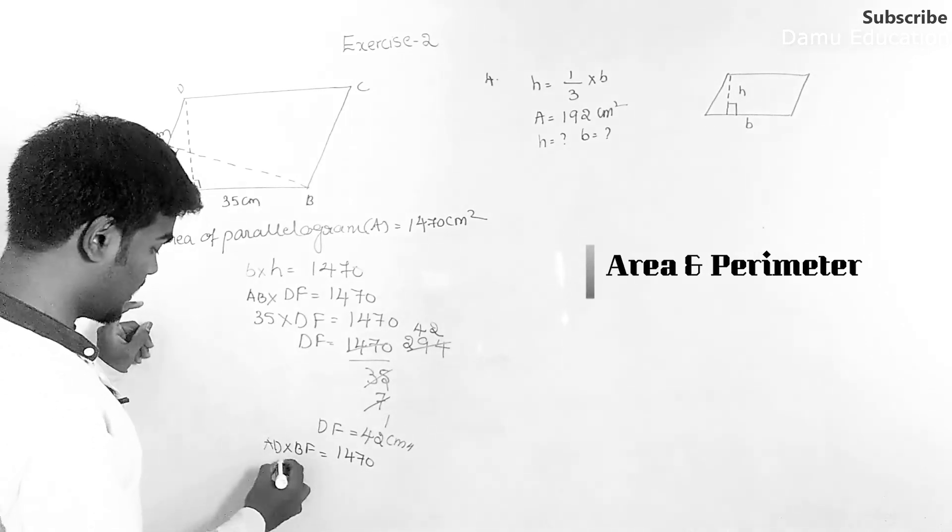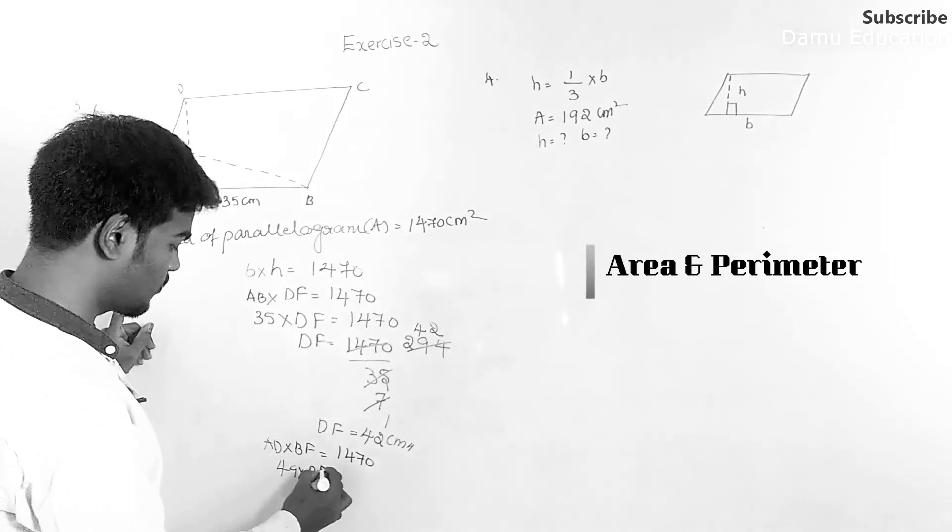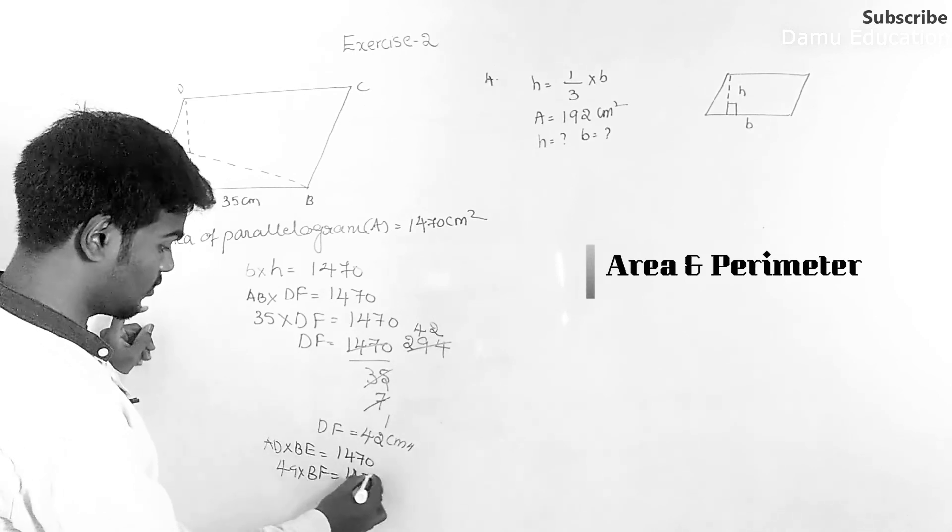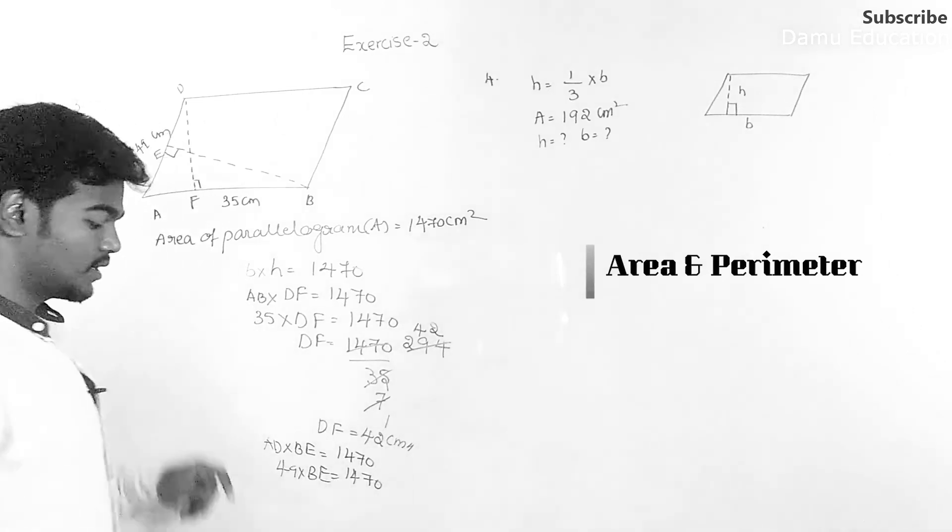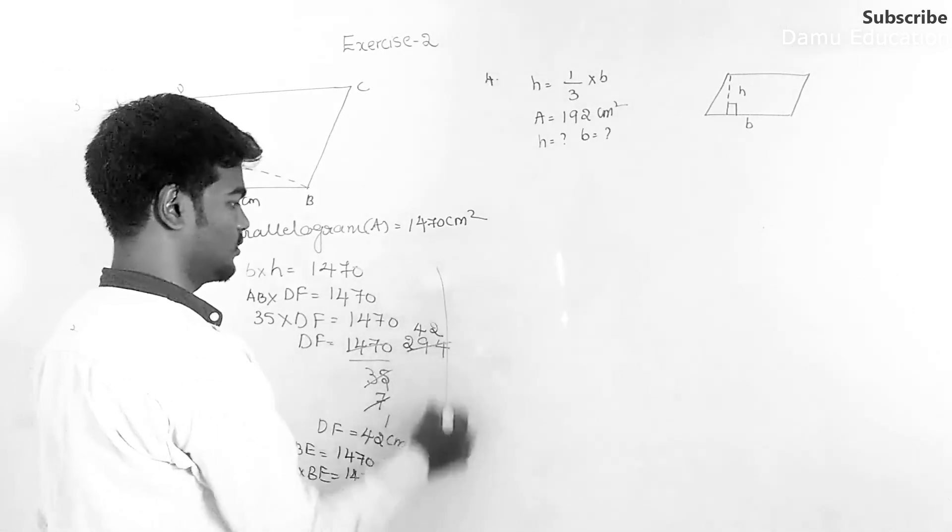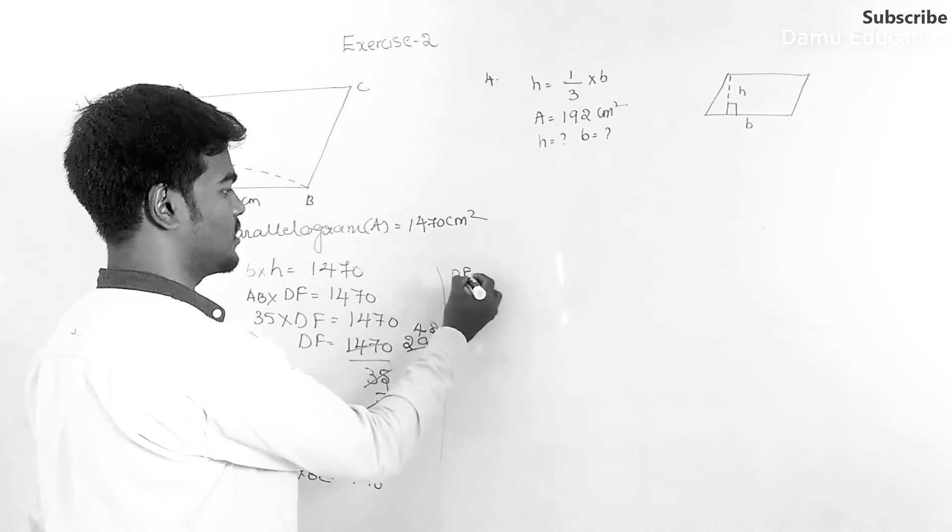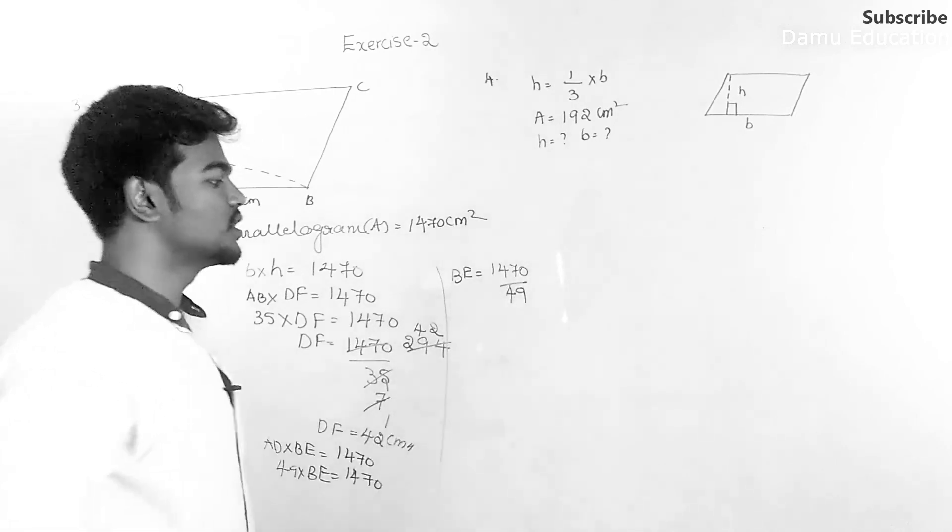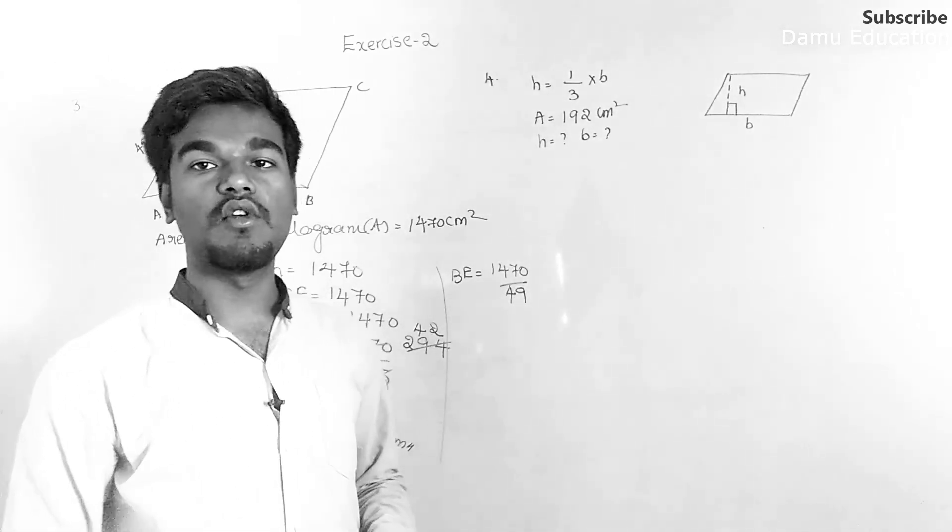So here we're going to find what is the BE value. Here BE will be equal to 1470 by 49. So it's better to do with 7.